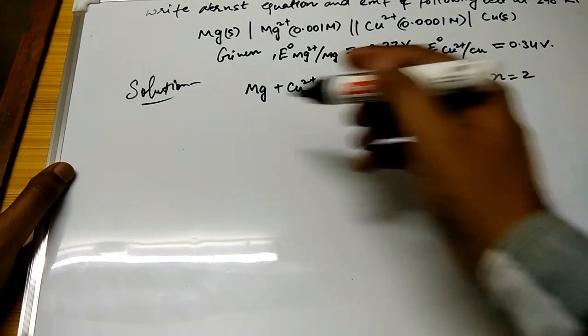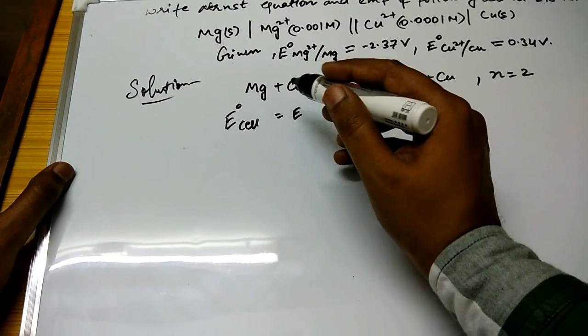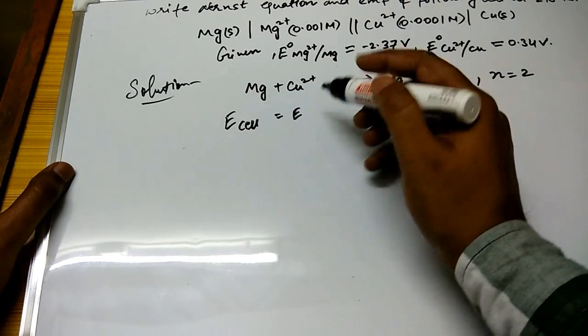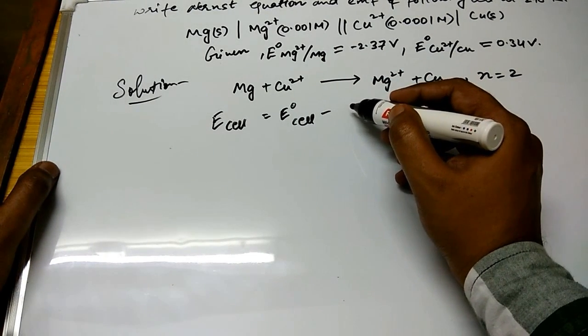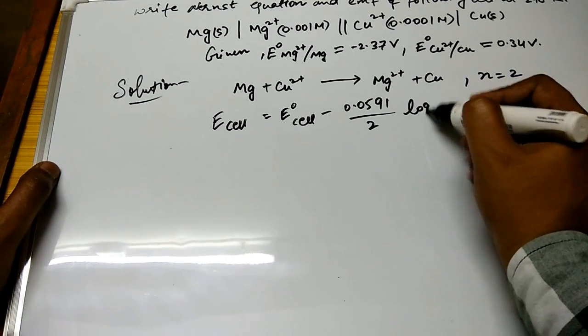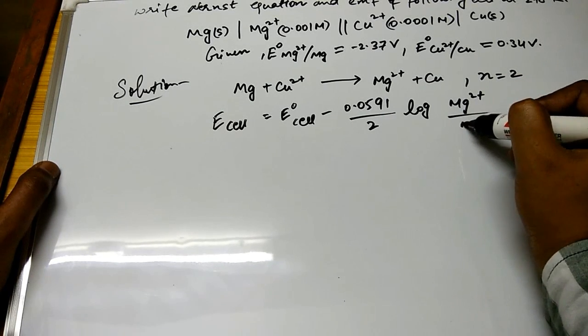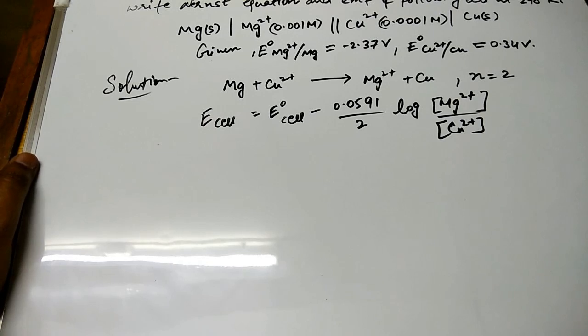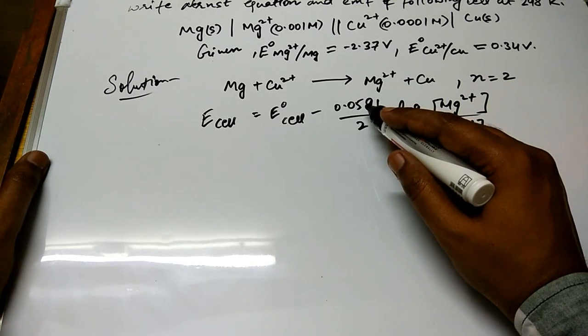Therefore now we need to write down the actual Nernst equation. E_cell = E°_cell - 0.0591/n log[Mg²⁺]/[Cu²⁺]. So in the last video of Nernst equation I have also told you how to put n and where, how will you be able to take out this 0.0591 value.